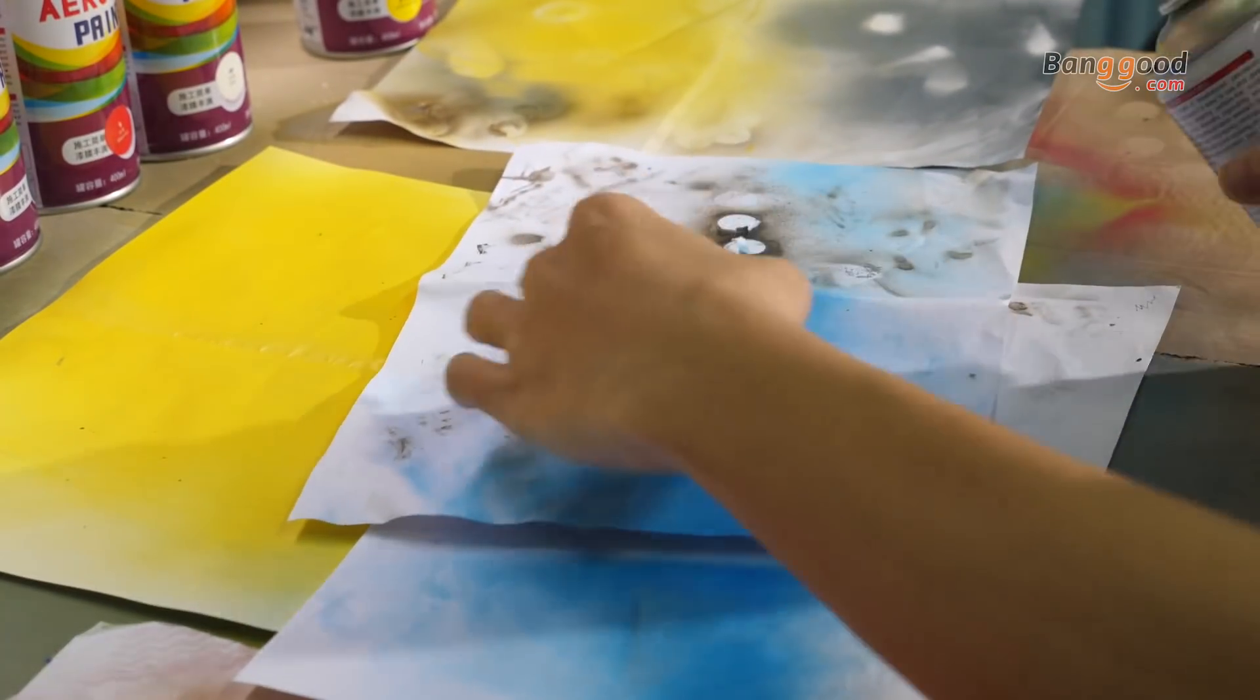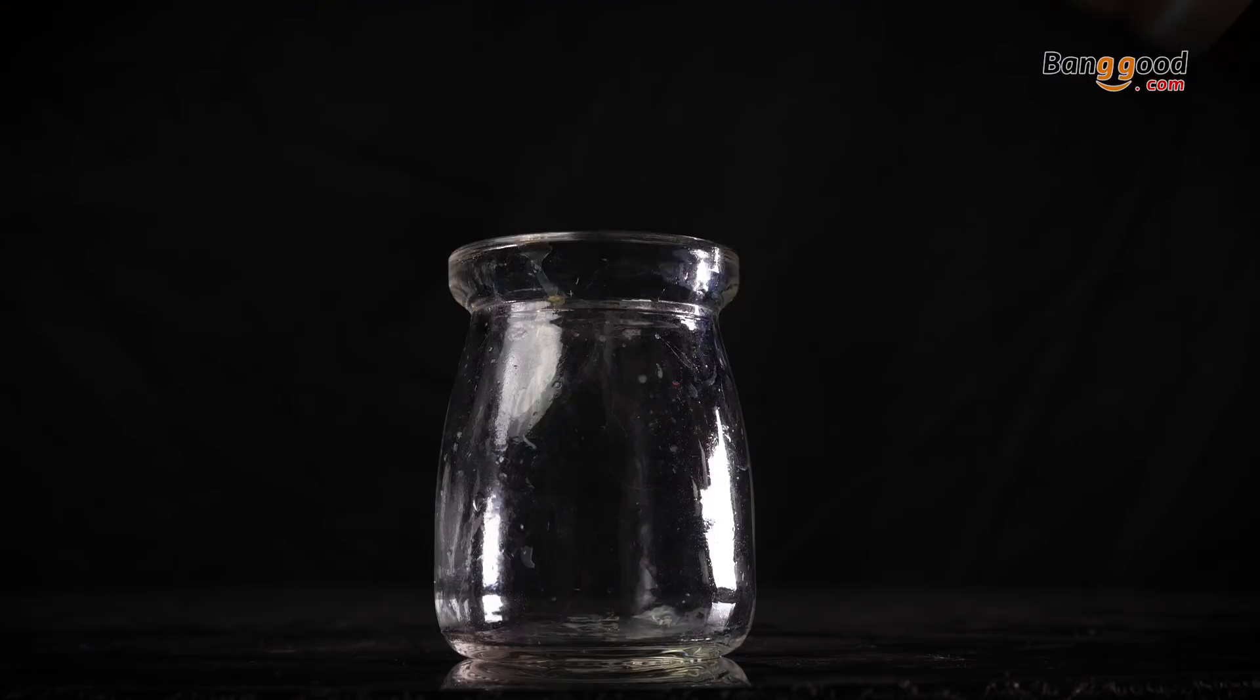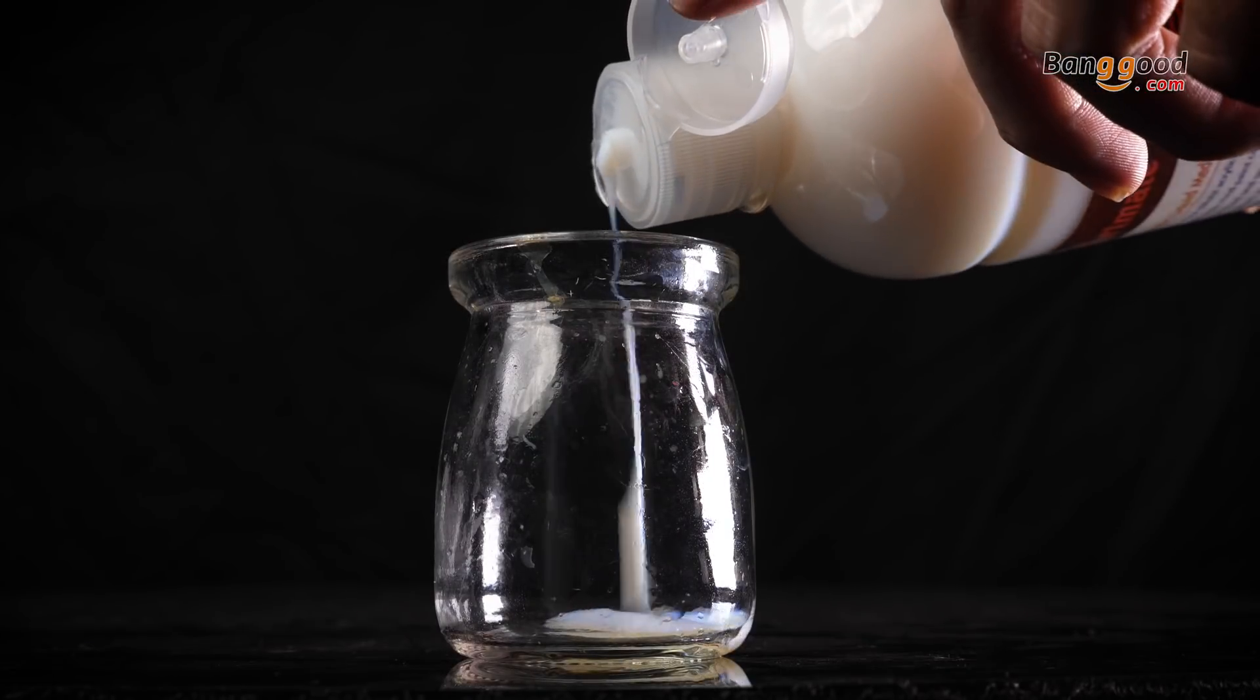After that, I realized that I don't have the brown spray for the bottom and wheels. Then I turned to use the acrylic color.